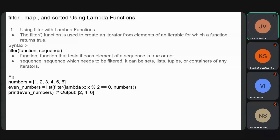The sequence to be filtered can be sets, lists, tuples, or any iterator. For an example of the filter function: we have a list of numbers from 1 to 6, then create another list using the filter function with a lambda — lambda x: x % 2 == 0 — as the first argument applied to 'numbers', and convert it to a list using list(). Printing 'even_numbers' gives the output [2, 4, 6].